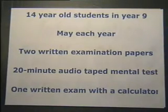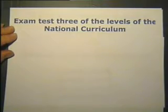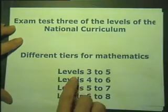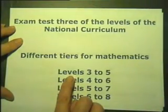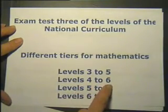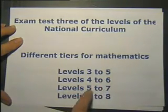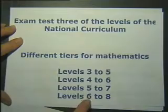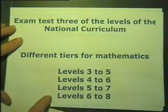Each of the exams tests three levels of the national curriculum. The levels examined should be chosen with full knowledge and consultation between teacher, student and parent. There are four tiers: either the student chooses to take the examination at level 3 to 5, level 4 to 6, level 5 to 7, or level 6 to 8.